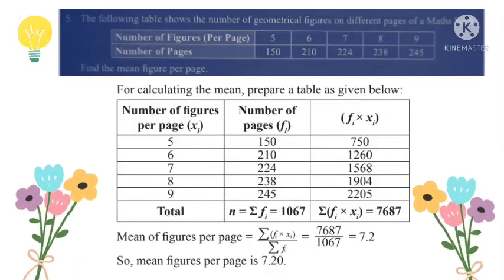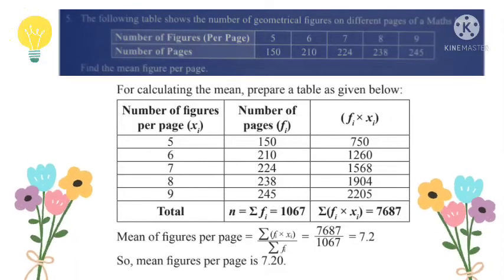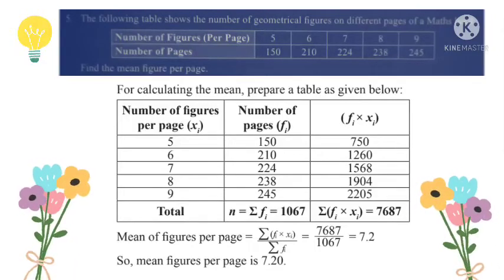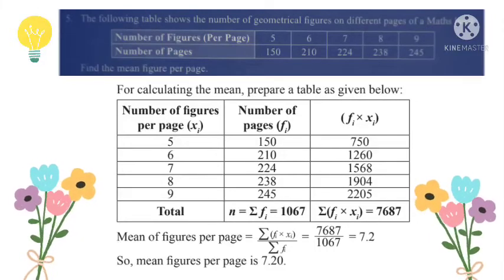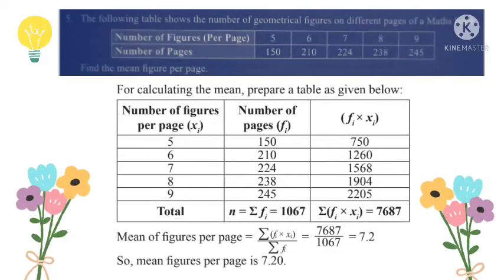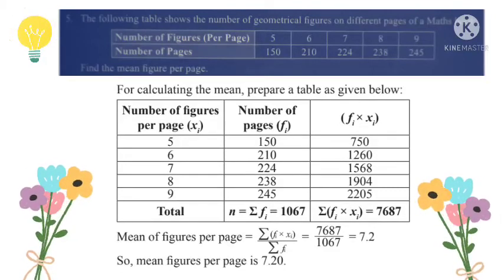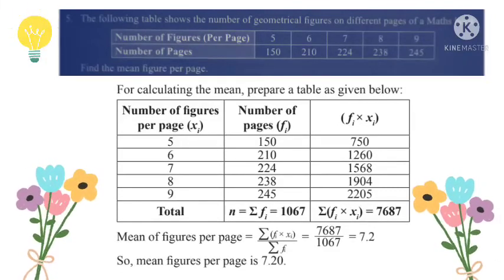The total for the second column, sigma f, equals 1067. The total for the third column, sigma f times x, equals 7687.